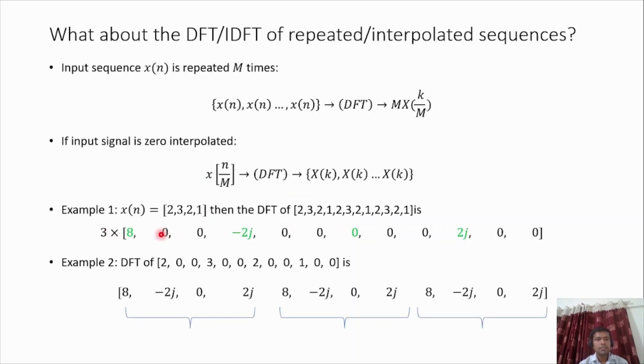Next, what if we want to calculate the DFT of repeated sequences or interpolated sequences? There's one more trick. If you have the input sequence x[n] which is repeated M times, this expression says we can calculate the DFT of a single sequence instead of calculating the entire repeated values. The DFT is multiplied by M, where M is the number of times it is repeated.